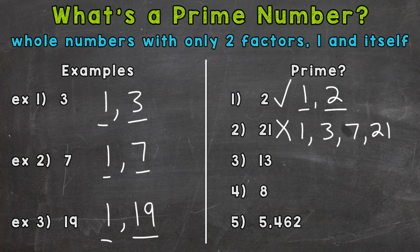On to number three, where we have 13. The only factors of 13 are one and 13, one and the number 13 itself. So 13 is prime.